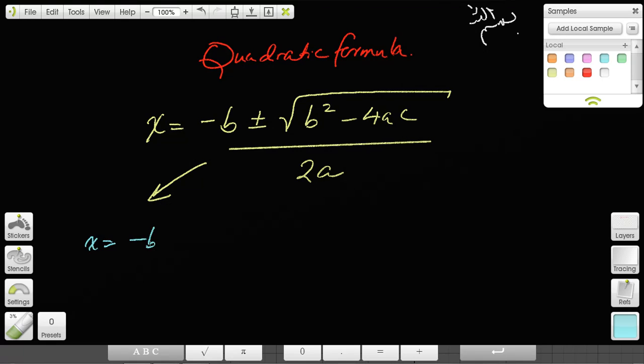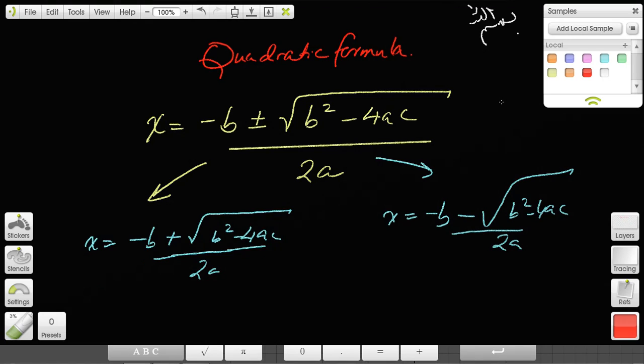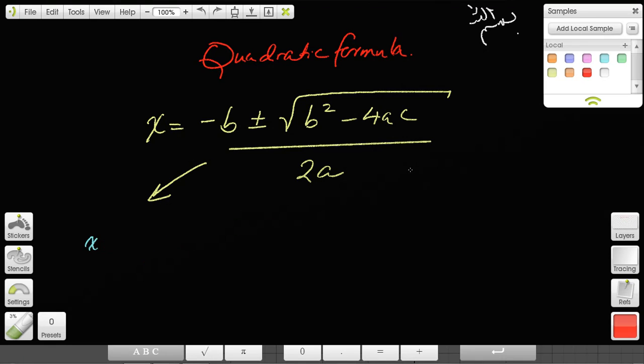You could write this as x = (-b + √(b² - 4ac)) / 2a, or you could write this as x = (-b - √(b² - 4ac)) / 2a. So the quadratic formula is two answers in one, and you must appreciate that it can give you two answers.